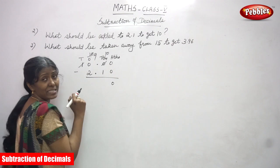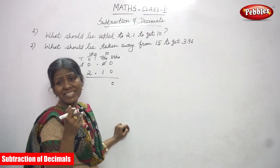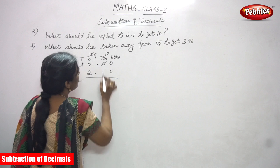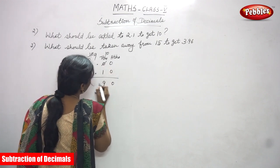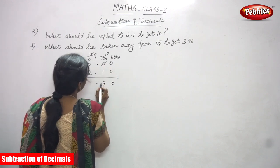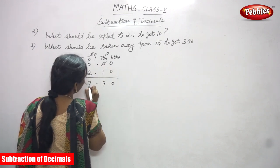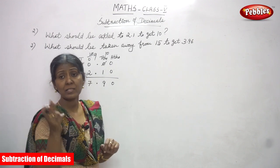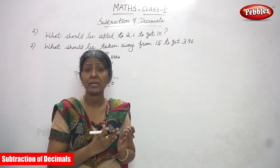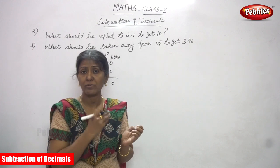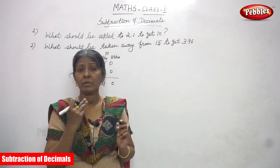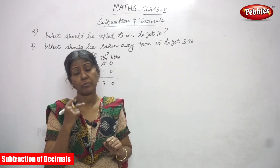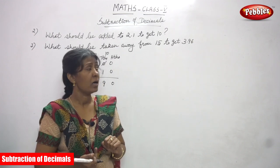So, this 1 becomes 0 — just put a 0 and cancel the 1. 10 minus 1 you can get 9. Then, 9 minus 2 you can get 7. There is no number in the 10's place, and 1 is cancelled because we are borrowing from the 10's place value. The number is 1, so we are borrowing from 1 ten.